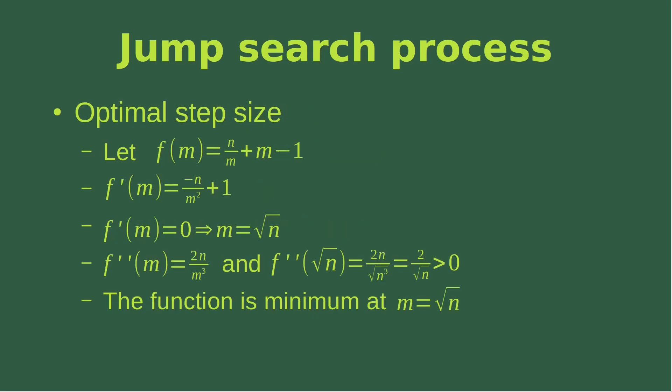After we have found the number of steps to jump, we can find out the optimal step size m. We let the function of m equal to the number of jumps required — that is n over m plus m minus one. We then take the first derivative of this function and equate it to zero. After some algebraic manipulation, we find that m is equal to root n. That means the step size in the jump search process is equal to the square root of the length of the array. Substituting this value of m into the second derivative, we find the second derivative is larger than zero, confirming the function reaches its minimum at m equals root n.